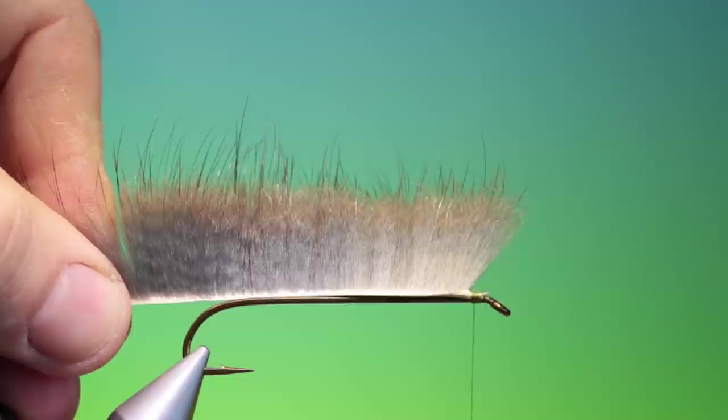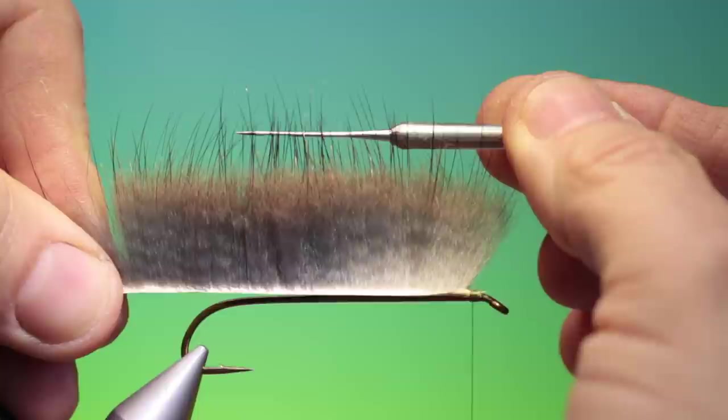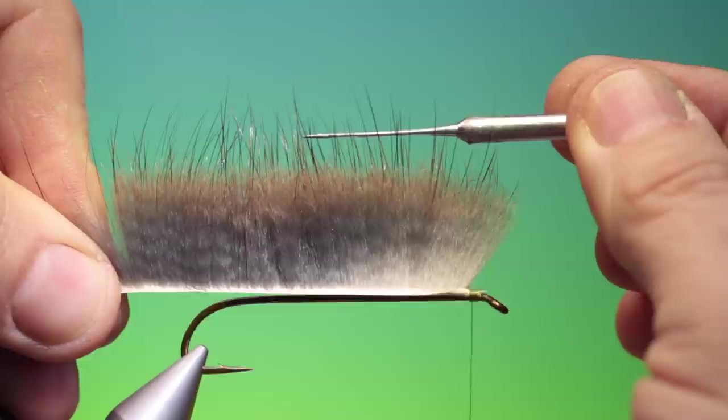So what we have is the dense under fur or down, which it's also called. We have the longer guard hairs which are these long, finely tapered, thicker hairs.